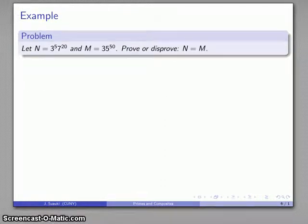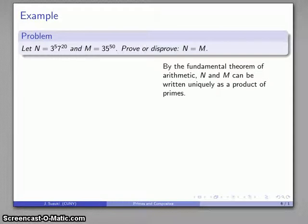For example, here's how we might use the Fundamental Theorem. I have two numbers. n is 3 to the power of 5 times 7 to the power of 20, and m is 35 to the power of 50. I want to prove or disprove that n and m are equal to each other. By the Fundamental Theorem of Arithmetic, both n and m can be expressed as a unique product of primes.